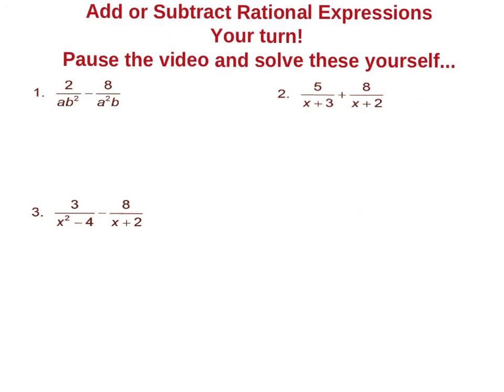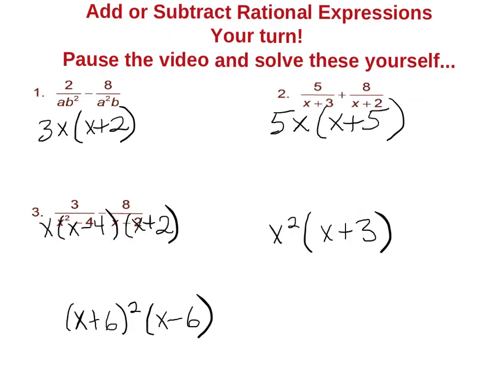Here are five questions — five groups of rational expressions. What I'd like you to do is find the LCD, the lowest common denominator, for each group. Press pause and I will show you the answers in a couple of minutes. Give them a try on your own. Here are the answers — hopefully you had some success, and if you have any questions please make sure you ask.